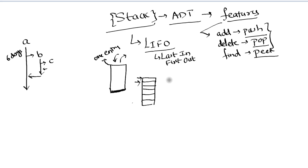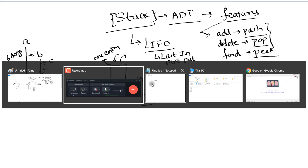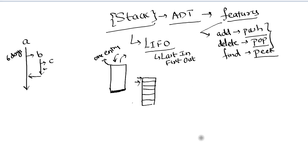In the virtual world as well — when you talk about recent applications in Windows, you use Alt+Tab. When you press Alt+Tab it shows all the applications you are working with. The first application shown is the last accessed one. So the last accessed element comes first — that is stack. We use stack a lot in both the real world and the virtual world.